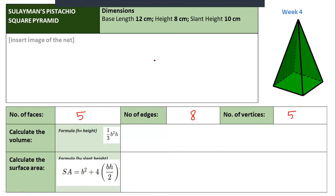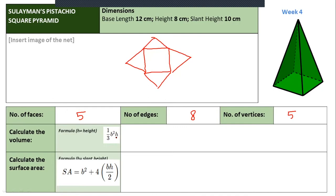The net — you can search Google. It's in the shape of a square, which is the base, and four faces in the shape of triangles around it. This is called the net of the square pyramid. For the formulas, there are two heights: the height of the pyramid itself, which is inside and perpendicular to the base, and the slant height, which is the height of the triangular face.